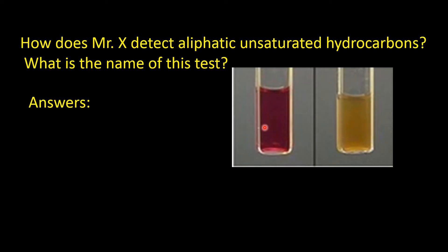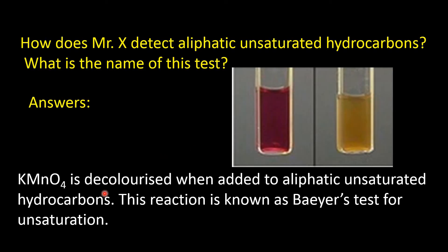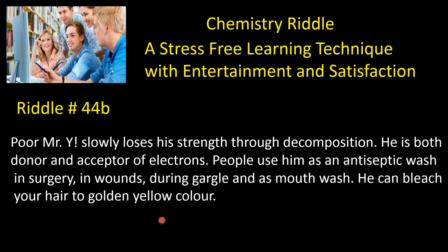As the color gets discharged, this is considered the test for unsaturation, and it is known as Baeyer's test for unsaturation. Potassium permanganate is decolorized when added to aliphatic unsaturated hydrocarbons. This reaction is known as Baeyer's test for unsaturation. Now coming to riddle number 44B.